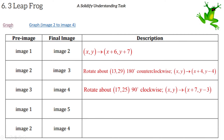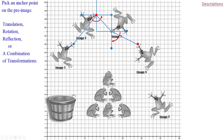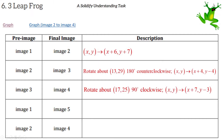Now image one to image five — going all the way across the graph. Looking at the two frogs, the pre-image and the image, it looks like we have a reflection and then a translation. If this leapfrog reflects over a vertical line, then the figure would look like the final image. I'll draw a vertical line through the anchor point, and the equation of that vertical line is x = 7.